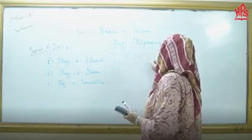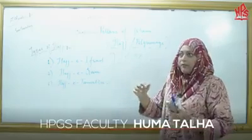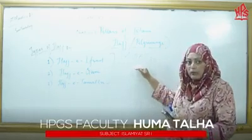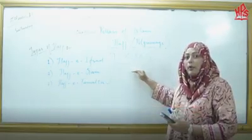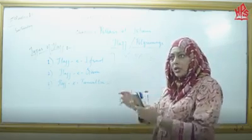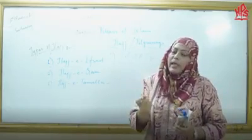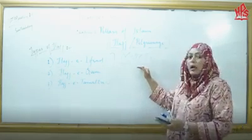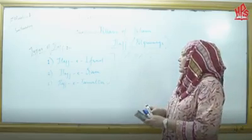Now let's start the other topic: Mikaat. What is Mikaat? Mikaat means the boundary from which you need to wear Ahram before crossing it. It's called the boundary of Hejaz, which is some miles from Haram at a distance. Before that boundary, the condition of Ahram becomes obligatory upon you. You have to wear your Ahram. This is called Mikaat.